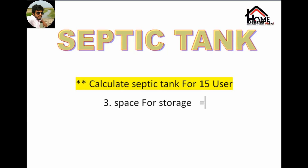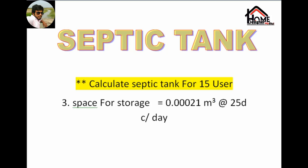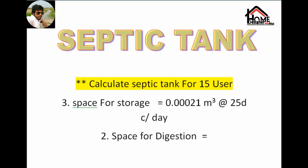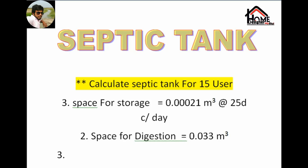Guys, septic tank ke three formula hota hai — three stages pe septic tank hota hai. Number three: space of storage jiska unit is 0.0021 meter cube and the rate of position 25 degree centigrade per day. Number two: space of digestion jiska unit is 0.033 meter cube. Number one: space of sedimentation.